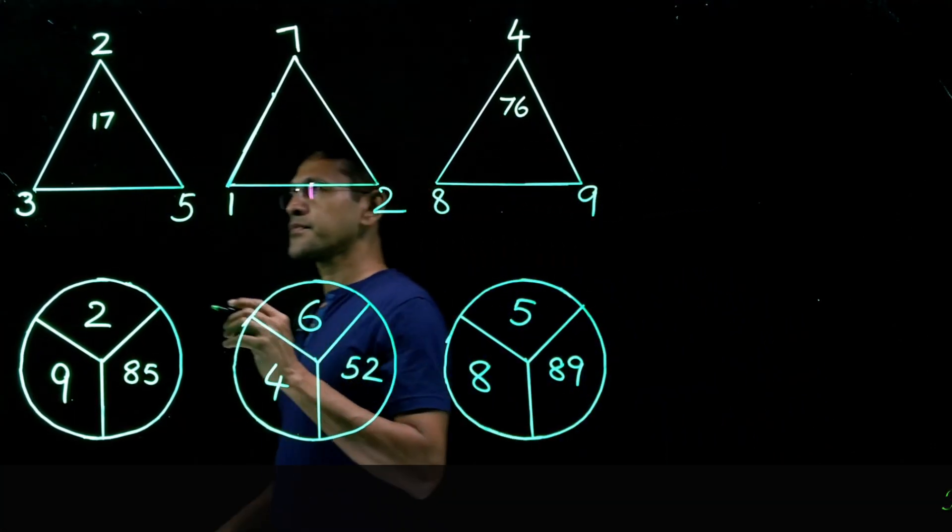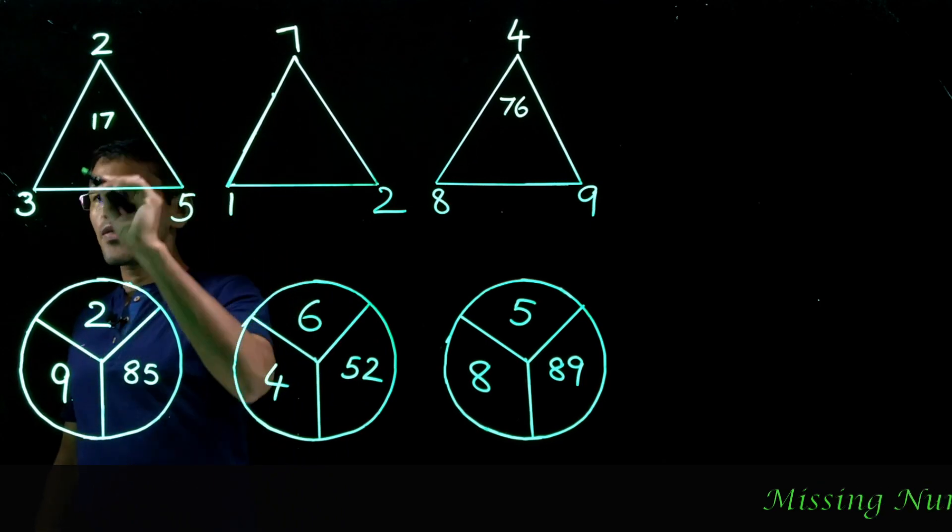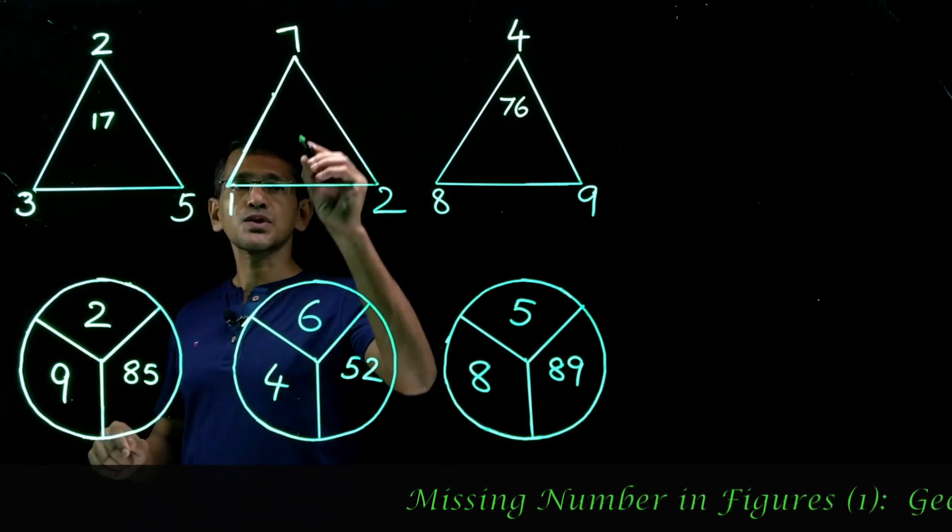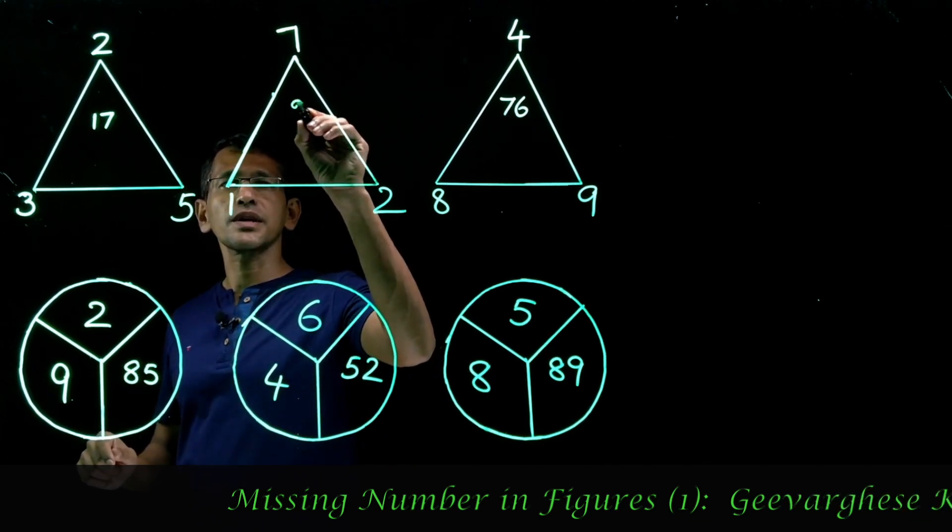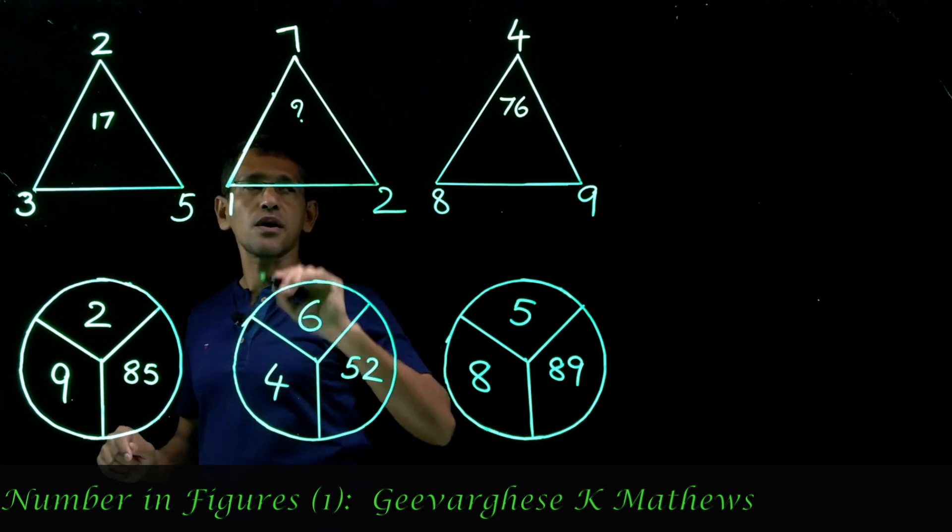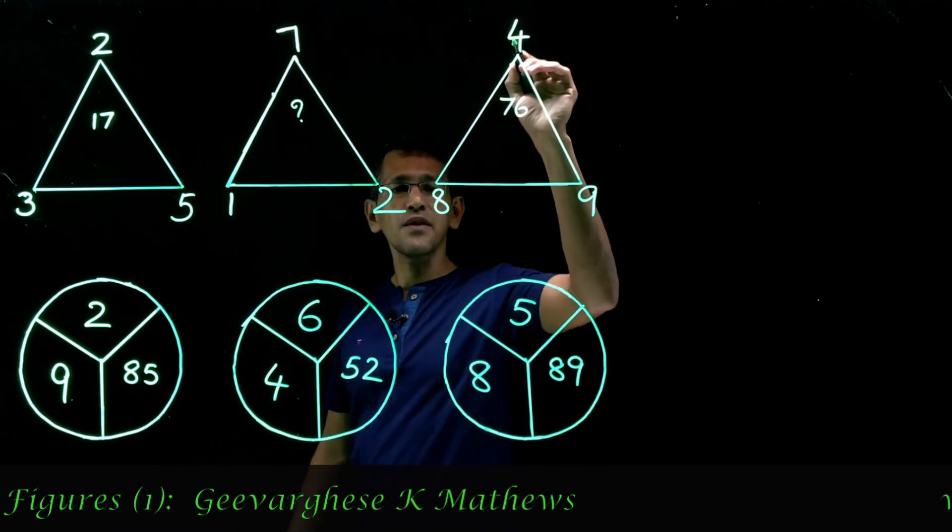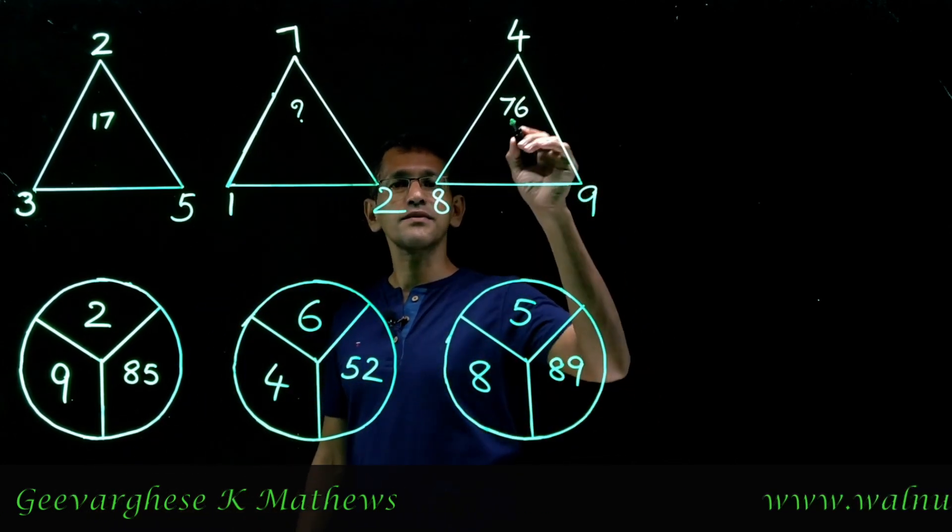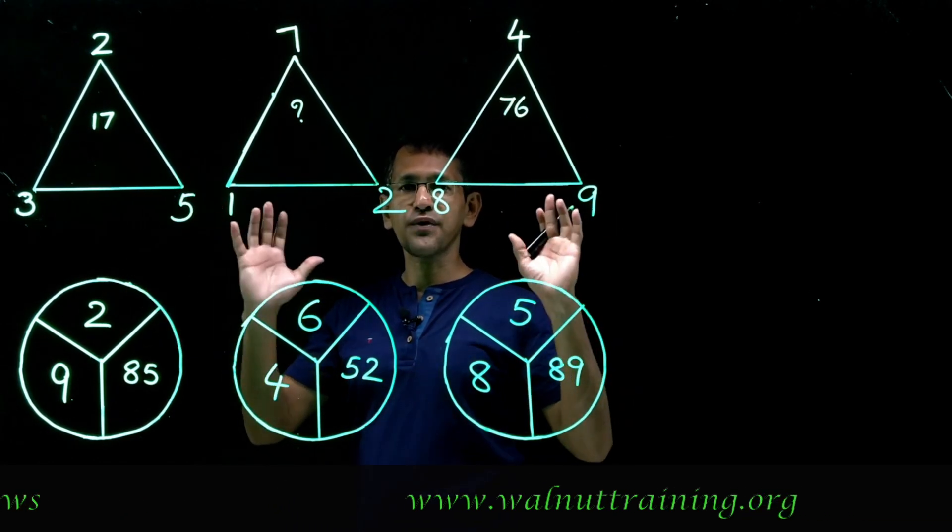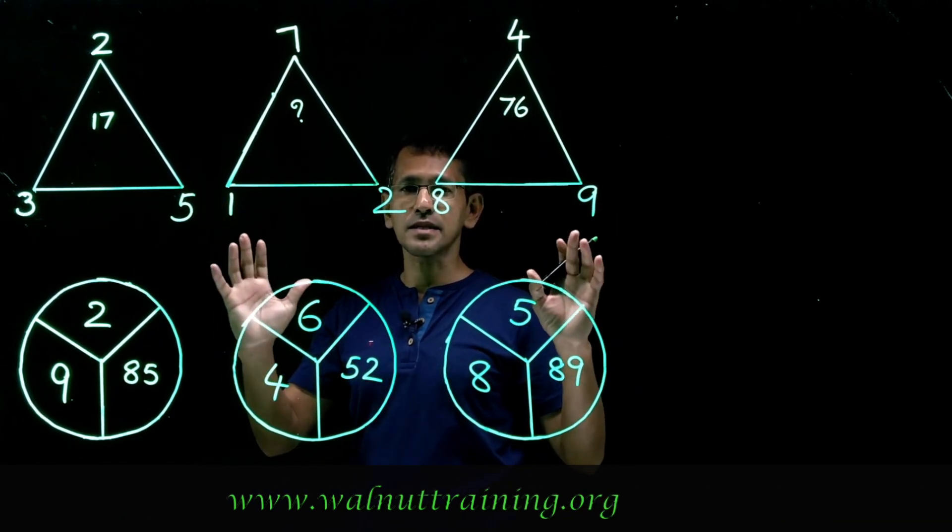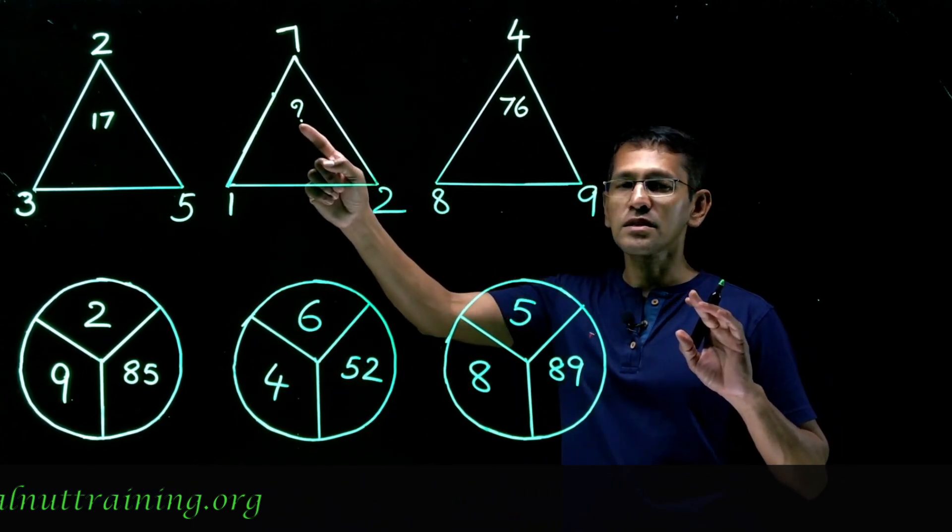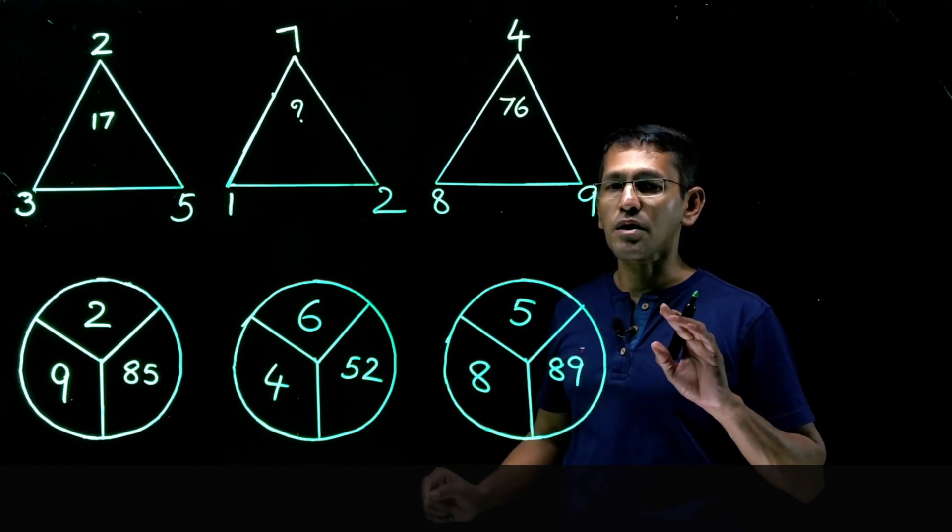So what you see right here, we have 2, 3, 5. In between we have 17. This one we have a question mark right here. We have 7, 1, 2, we have a question mark. And in this case we have 4, 8 and 9, 76 in the middle. So there must be a pattern. We need to find out what exactly the pattern is. According to that pattern we need to find this number that replaces the question mark.